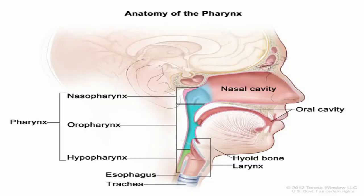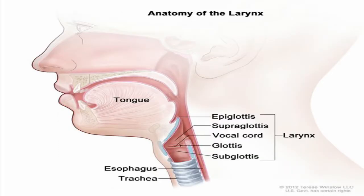Air from either the mouth or nose ultimately joins at the pharynx, the part of the throat behind the mouth and nasal cavities. The pharynx is approximately five inches in length in the average-sized human and can be broken down into three parts: the nasopharynx, the upper part of the throat behind the nose; the oropharynx, the middle part where the oral cavity joins; and the hypopharynx, the bottom section where the division between the trachea and the oesophagus occurs. The oesophagus continues down into your stomach, whilst the trachea, or windpipe, is a tube that connects to your lungs.